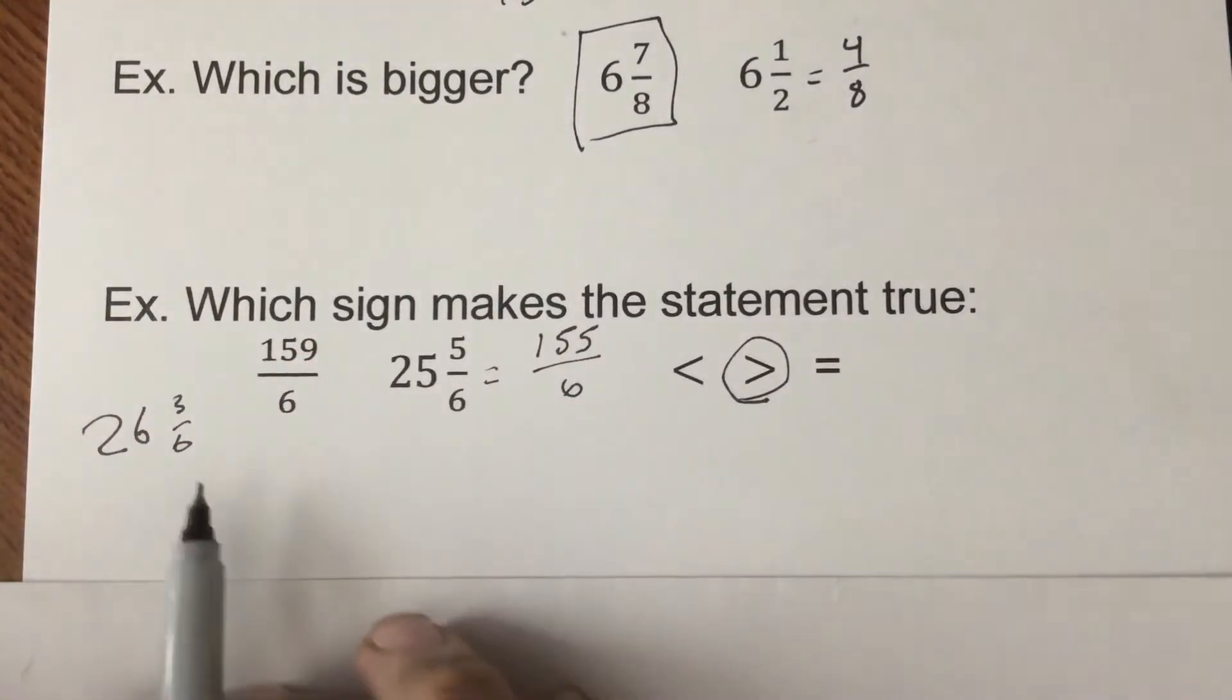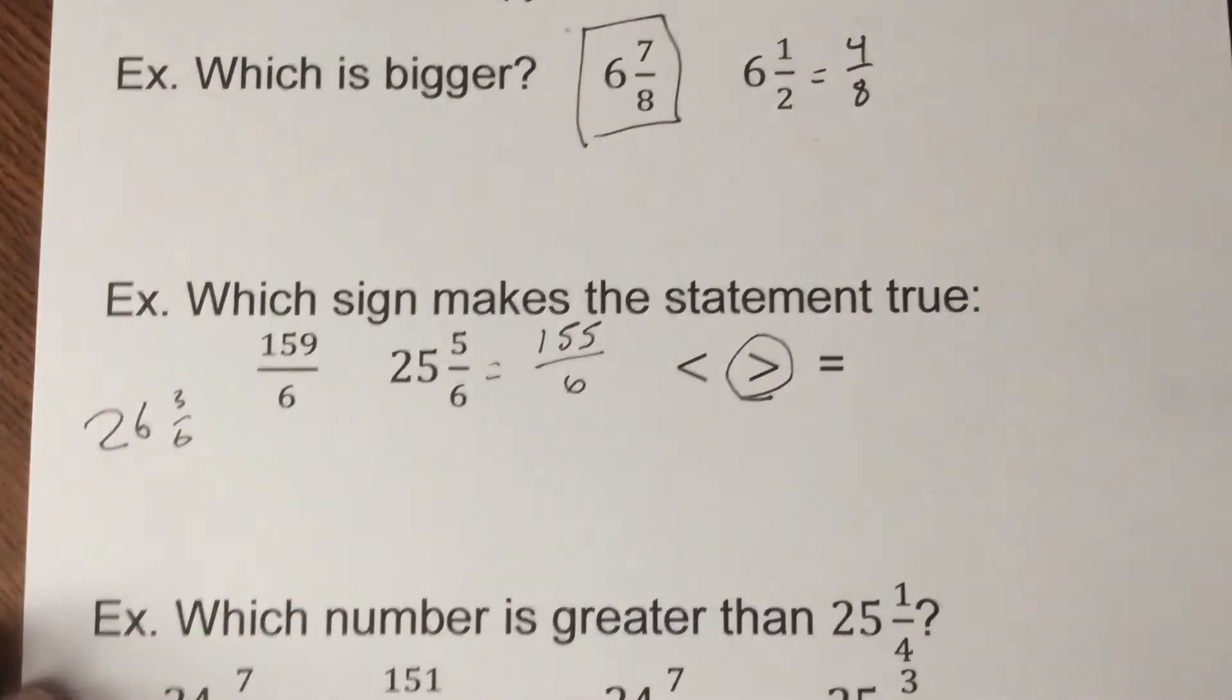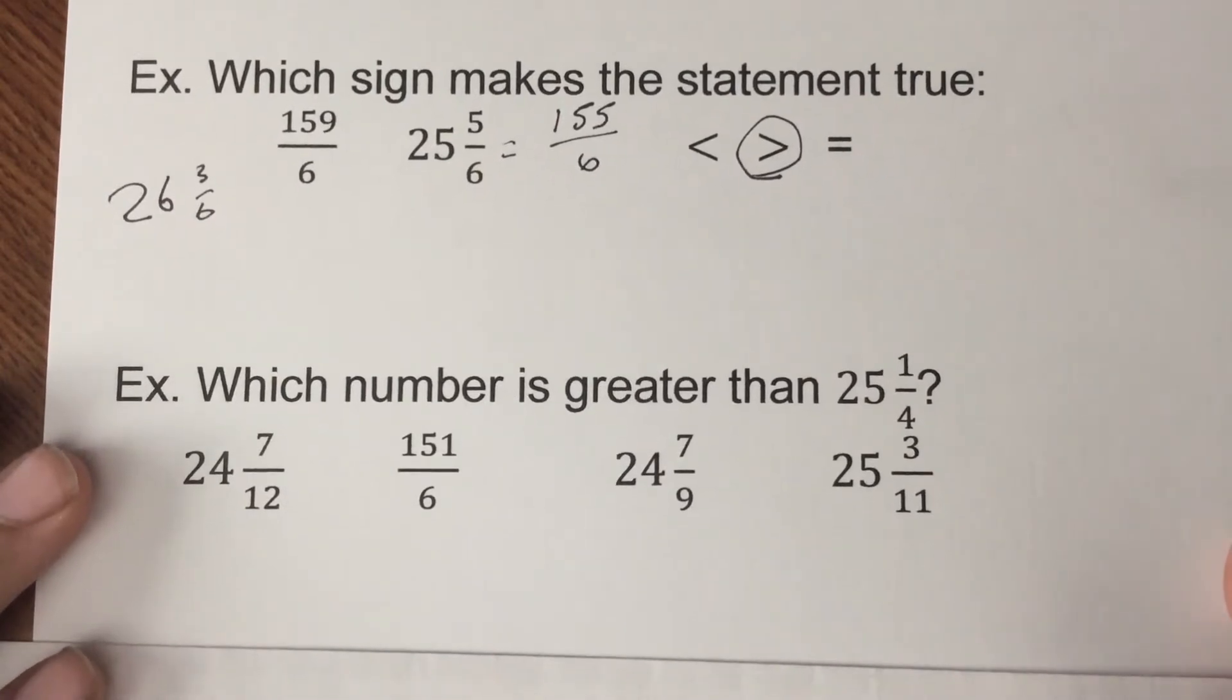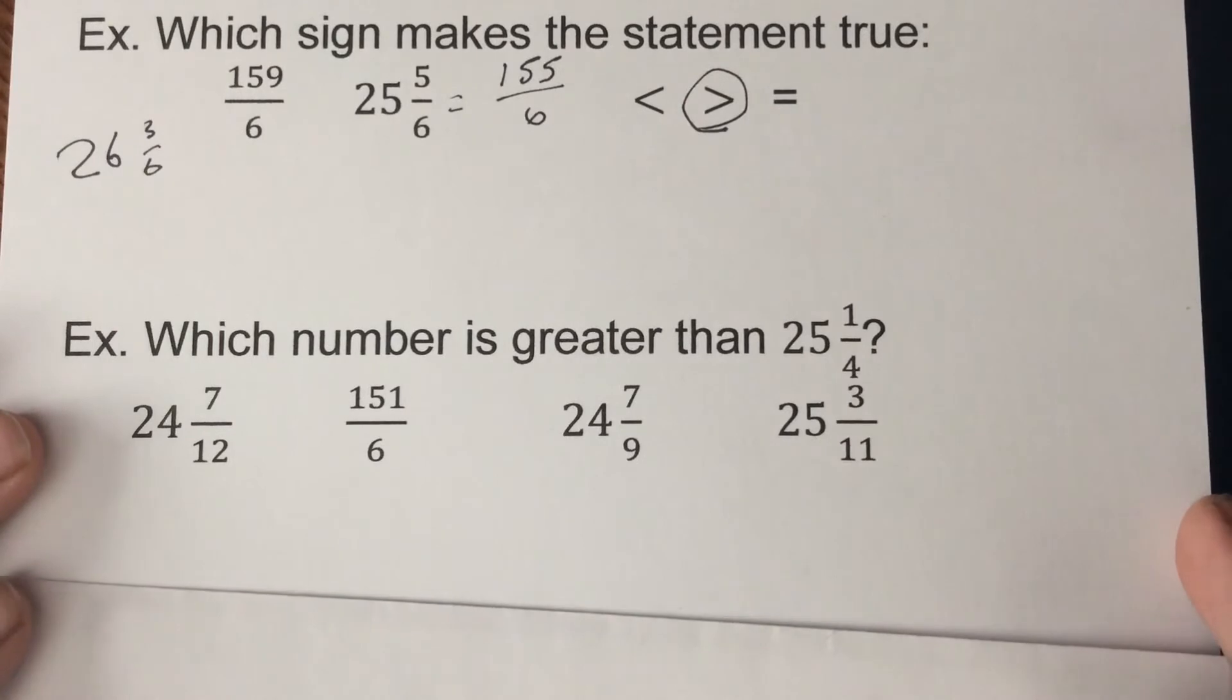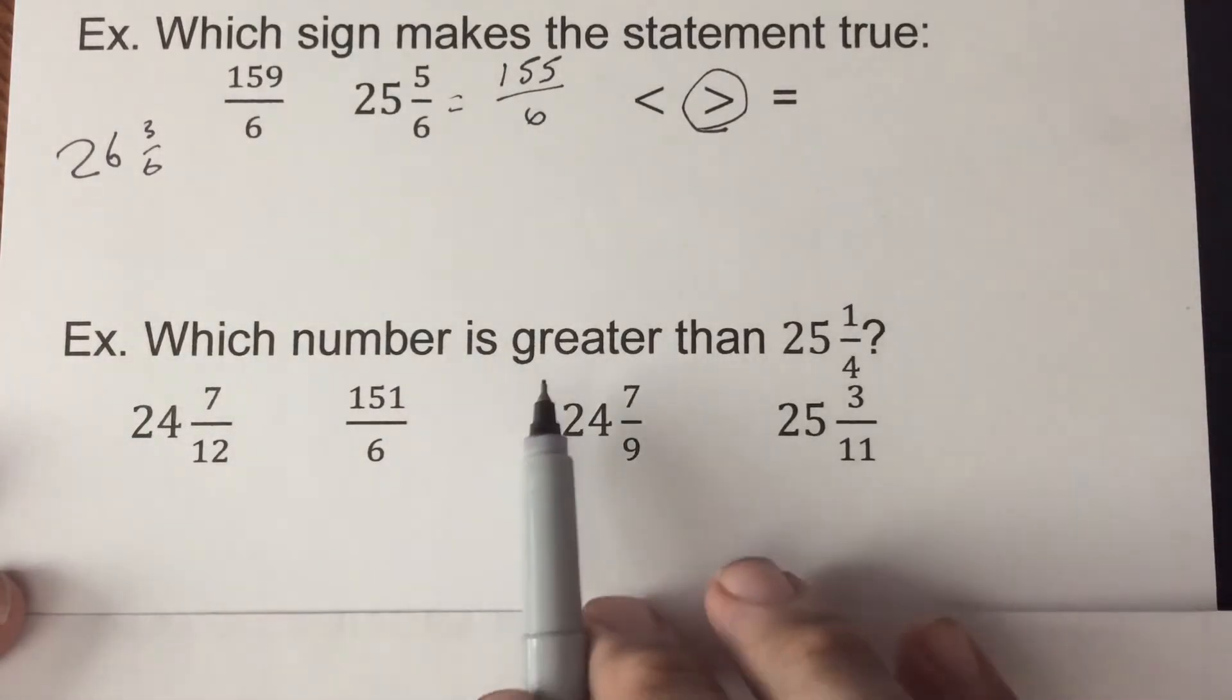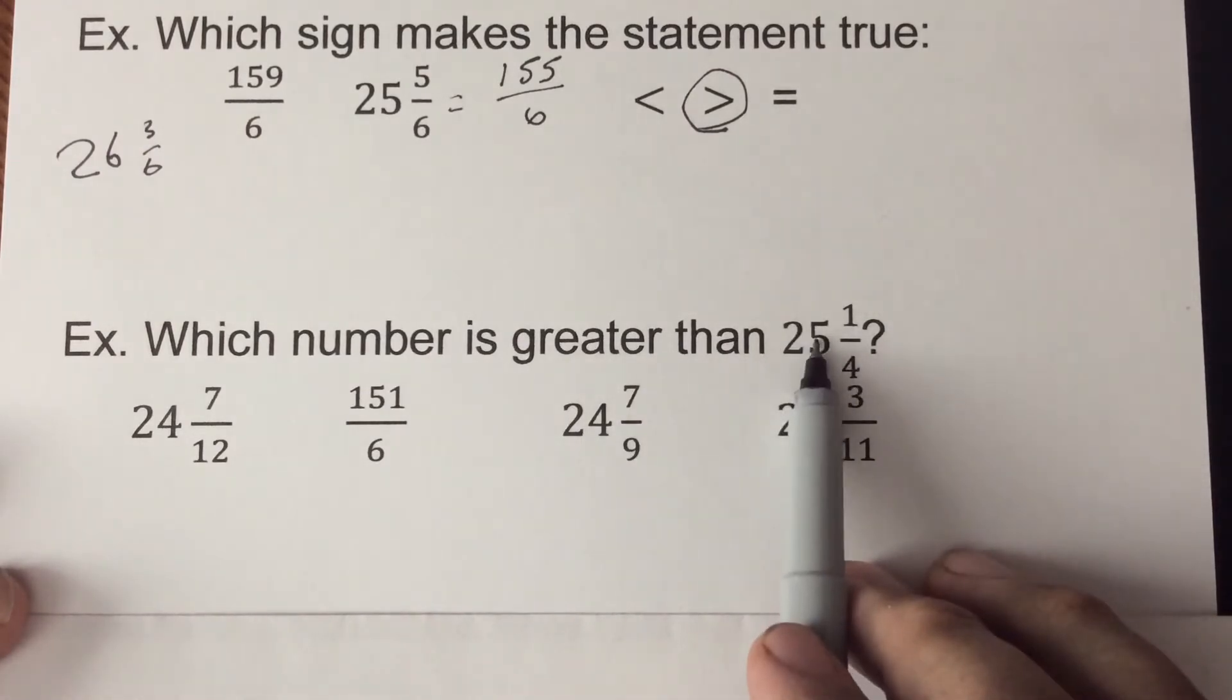You're also going to get some like this where you have to determine which ones are going to be greater than 25 and 1/4. So easy way to go about this, if we're going to be greater than 25 and 1/4, we know we have to be bigger than 25. So anything less than that whole number we know isn't going to work.